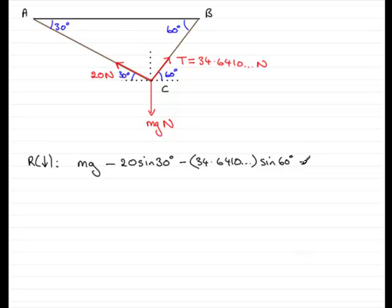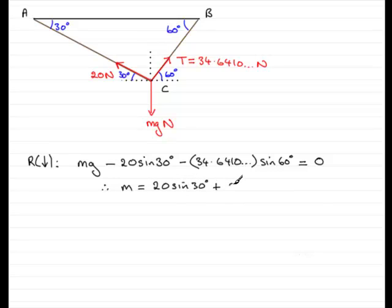And because it doesn't move, that resultant force must be zero. So all we need to do now is just rearrange this to make M the subject. If I add these two terms to both sides and divide by G, we would find that M equals 20 sine of 30 degrees plus 34.6410 multiplied by sine of 60 degrees, and then divide both sides by G.